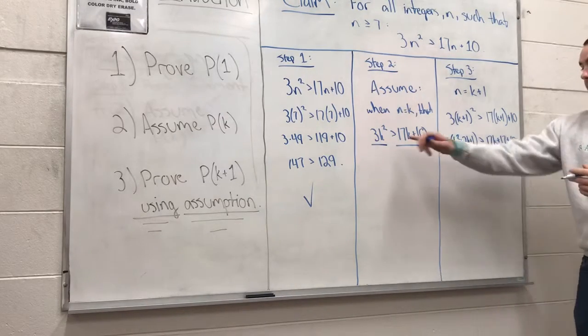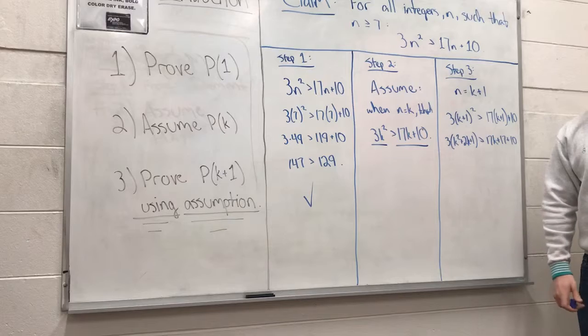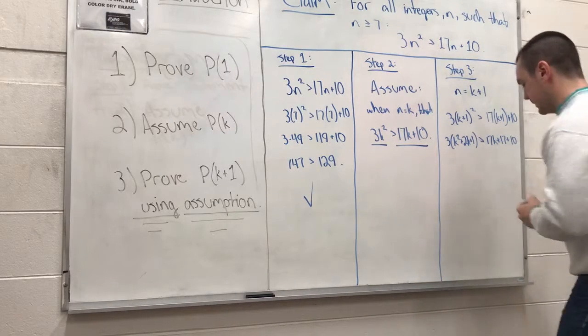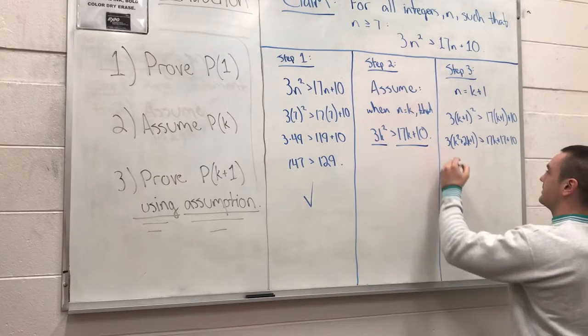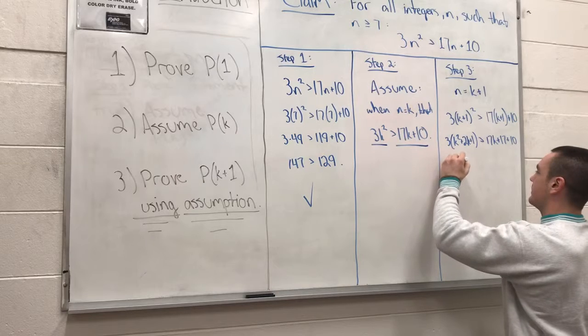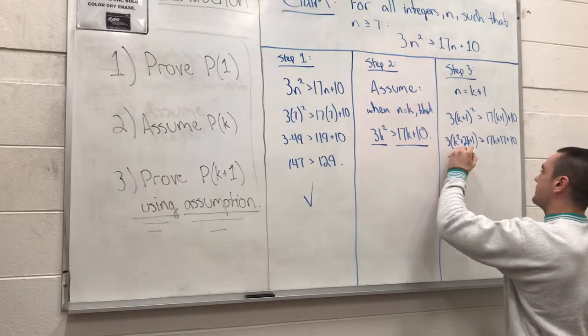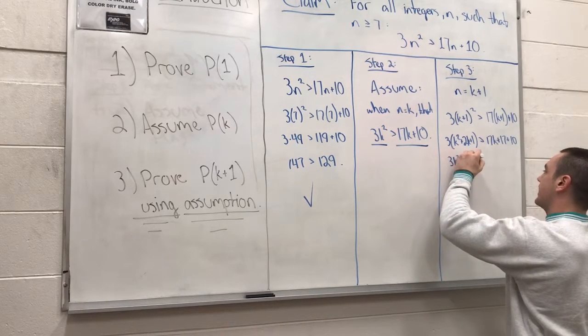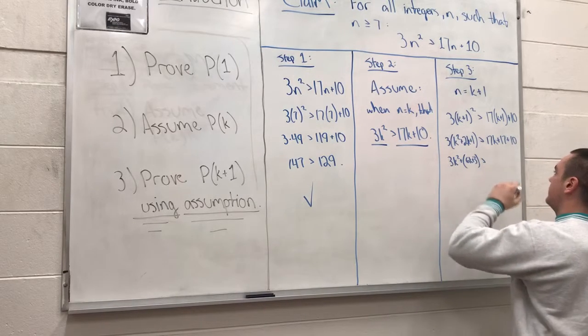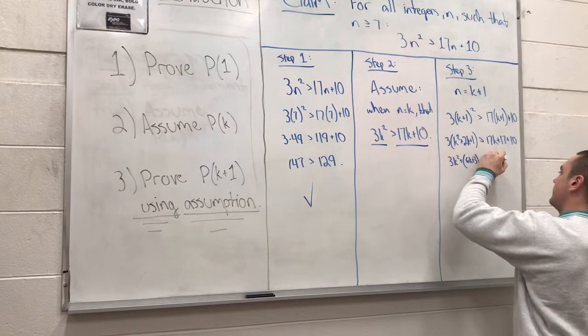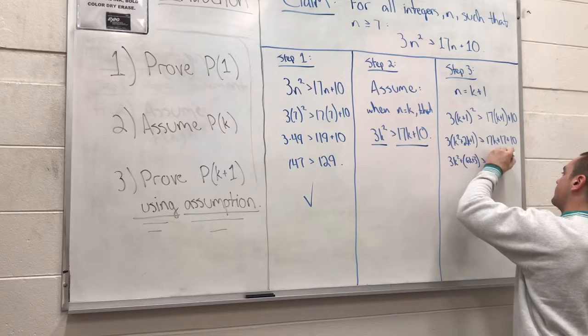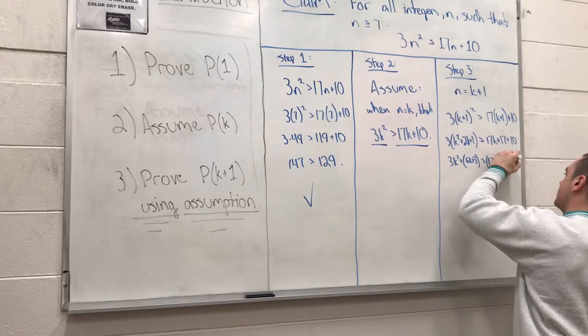Now we said we want to use these two terms right here. So we'll rewrite this in a way where we can get that. We have 3k squared plus 6k plus 3 is greater than 17k plus 10 plus 17.